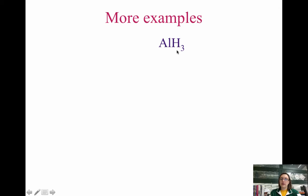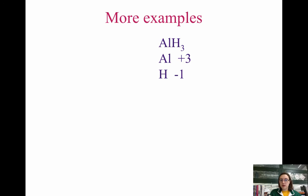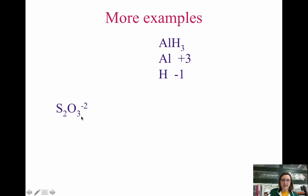In AlH₃ (aluminum hydride), hydrogen is bonded to a metal, so it's −1, and aluminum is +3. Most metals will have oxidation states matching the charges we know from the periodic table. For S₂O₃²⁻: each oxygen is −2, so three oxygens give a total of −6. Since the ion must equal −2 overall, the two sulfur atoms must together contribute +4, meaning each sulfur is +2. Check: (+2×2) + (−2×3) = +4 − 6 = −2. ✓